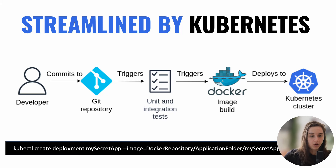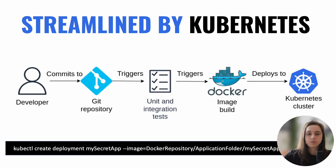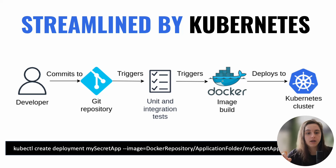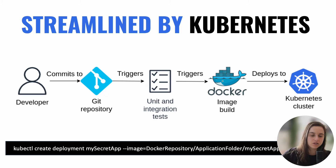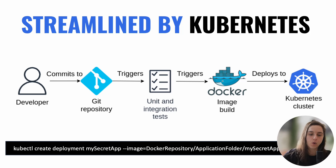The code to deploy an app on Kubernetes with the kubectl command is as simple as providing the deployment name and the application image location. For example: kubectl create deployment mysecretapp --image docker-repository/application-folder/mysecret:appv1, which is version one of the application.